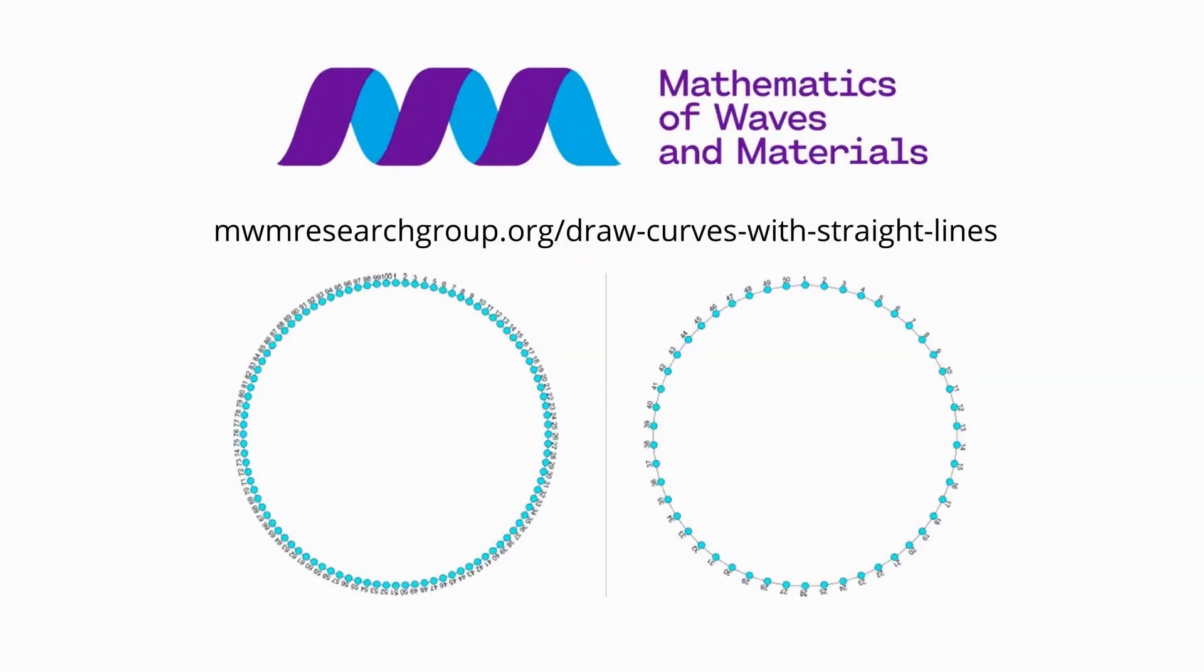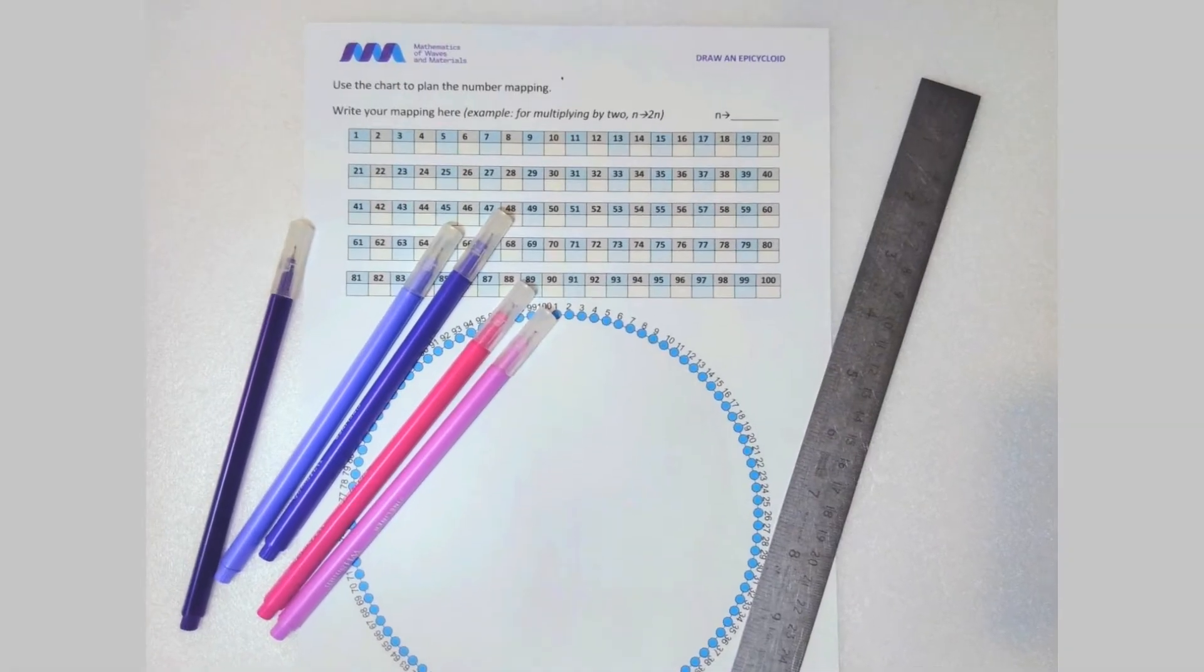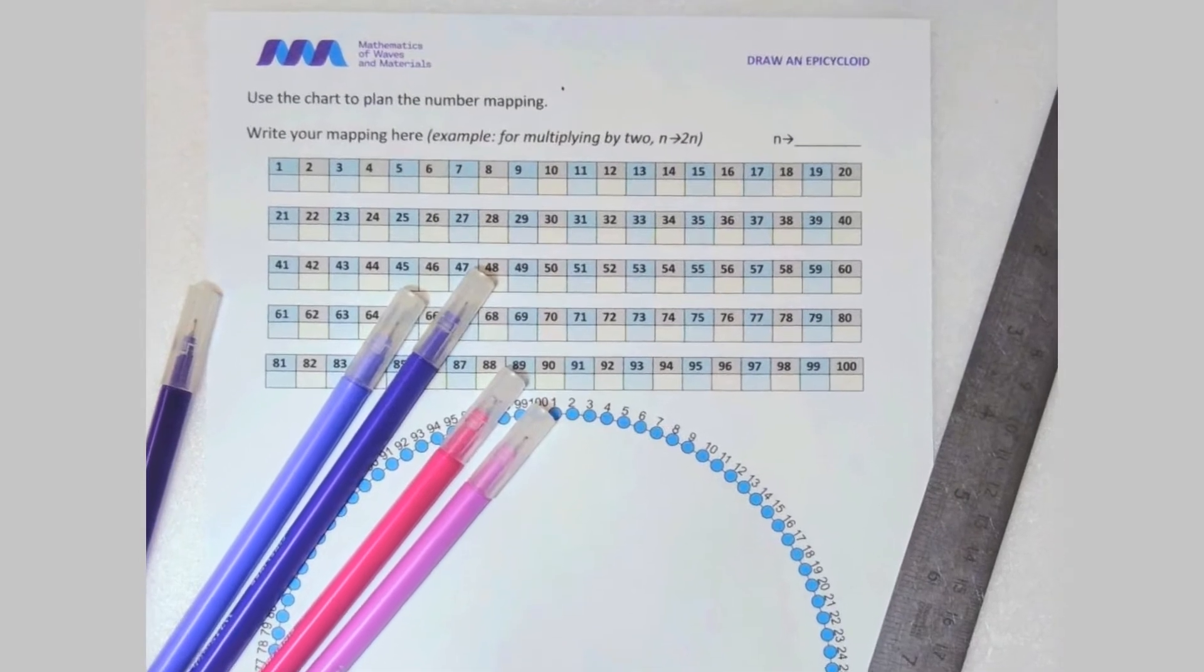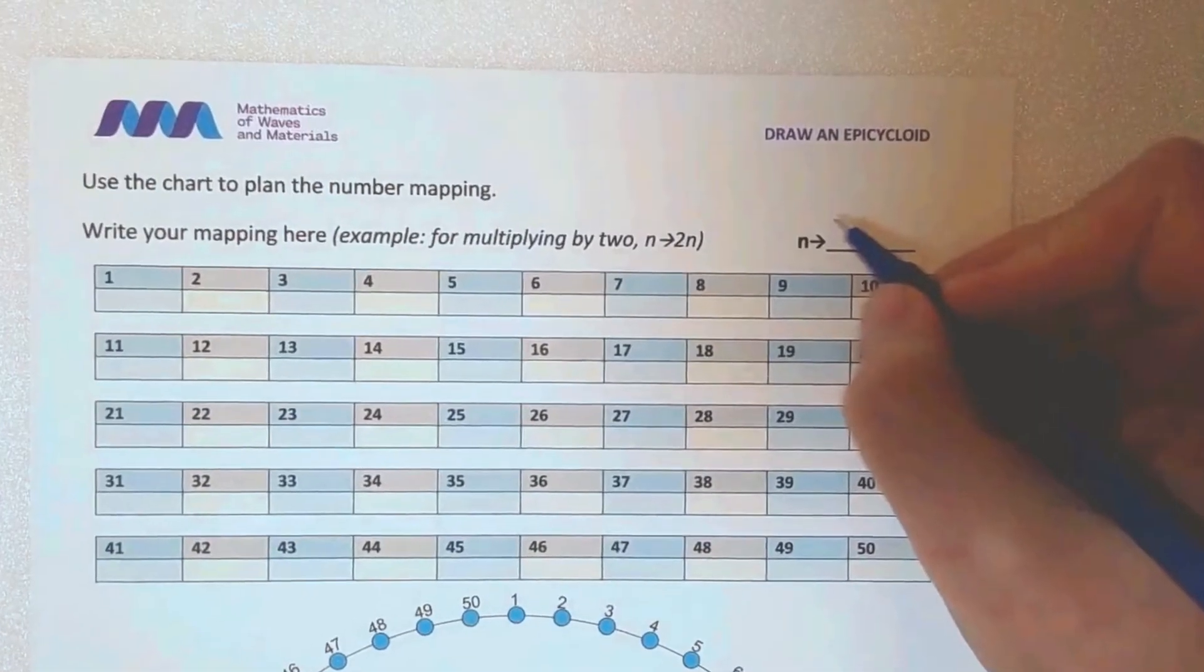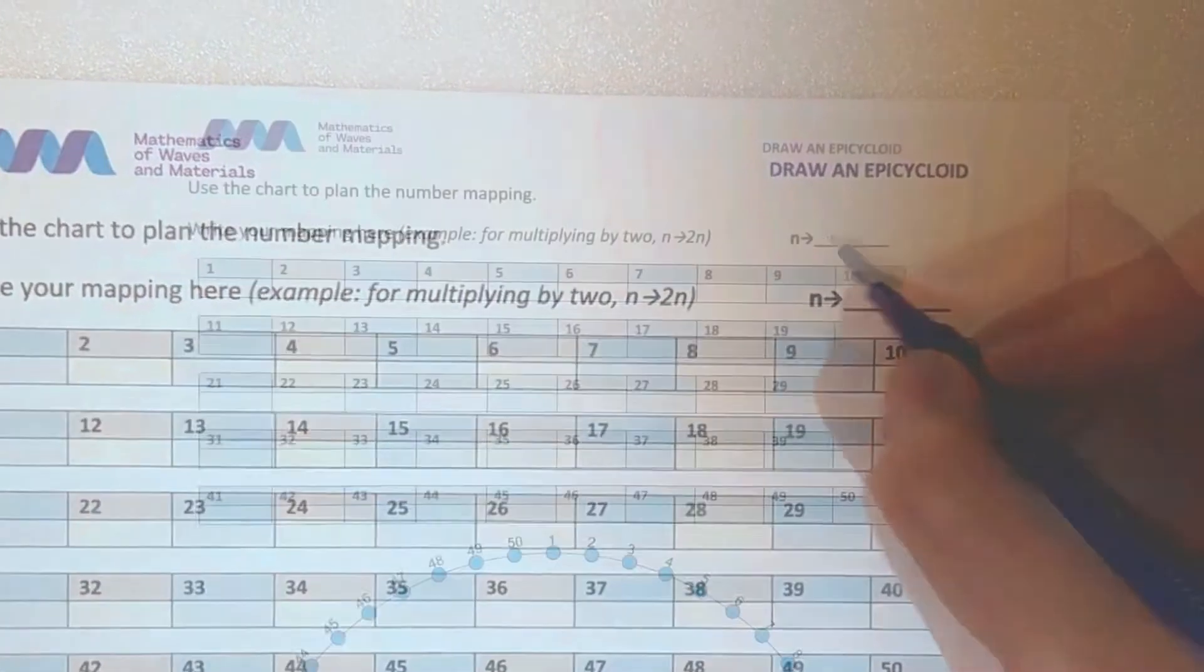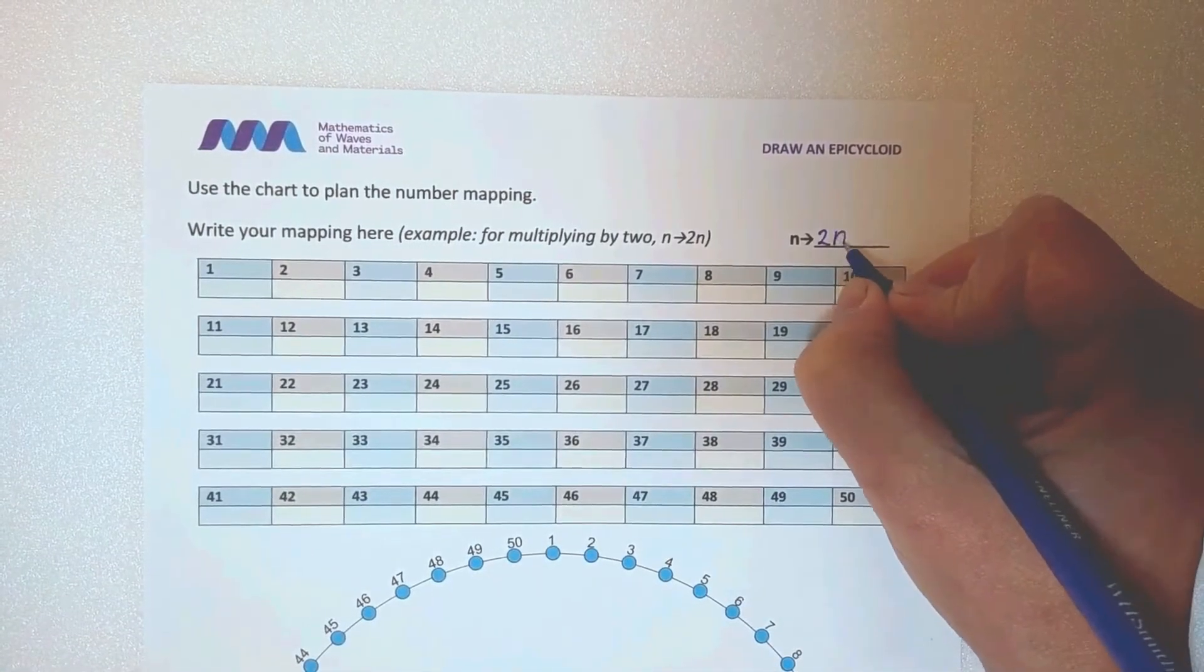Download a template from the Mathematics of Waves and Materials website. To draw your epicycloid, you will need a ruler and colored pens or pencils. You are going to connect points on the circle with straight lines. In the table, fill in the number you are going to connect each point to.